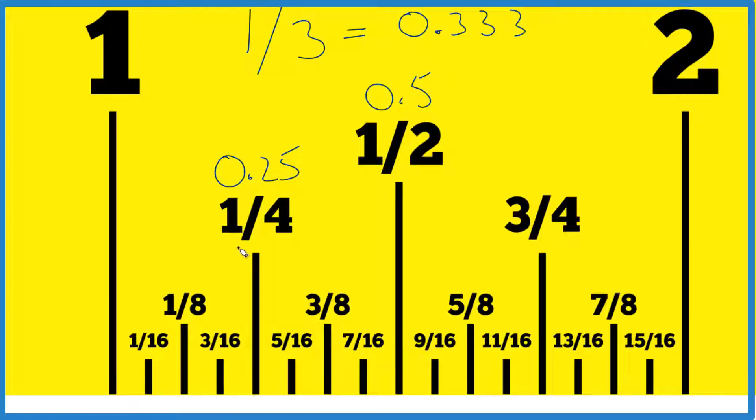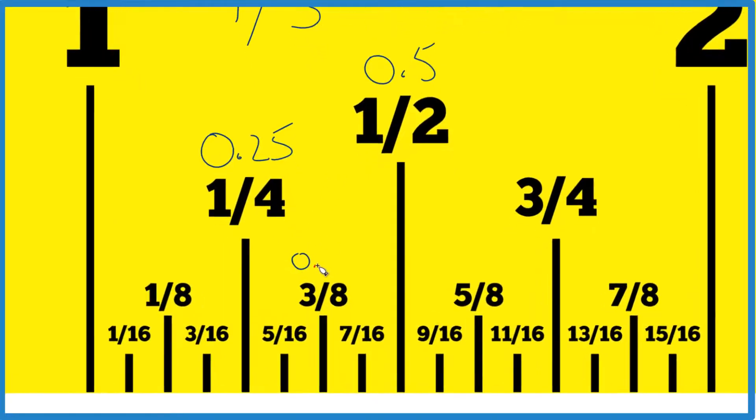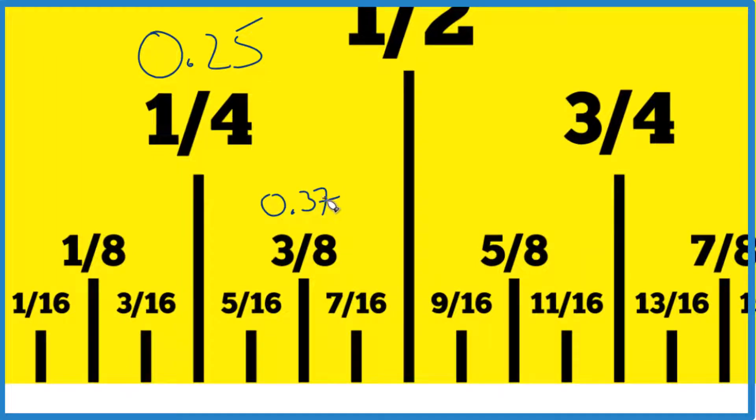Now we know since it's 0.33, that's less than 0.375, so it's going to be between 0.25 and 0.375, between one-fourth and three-eighths.